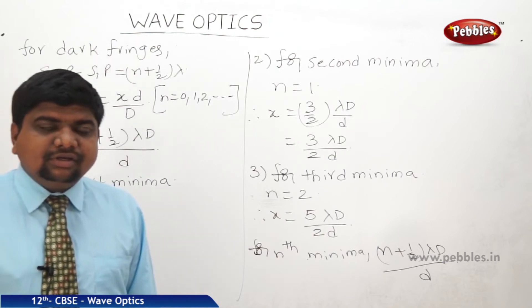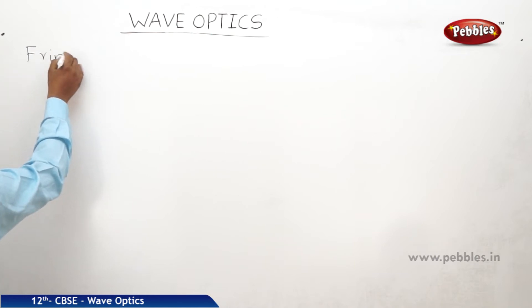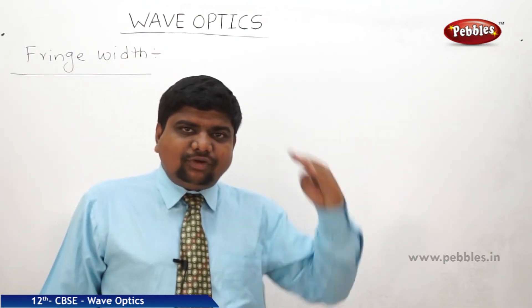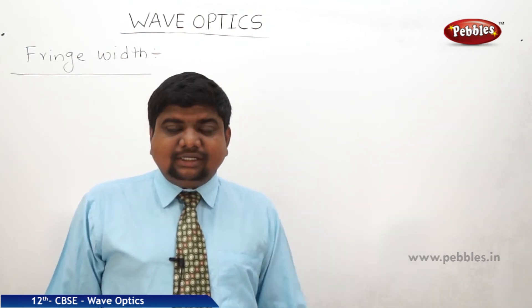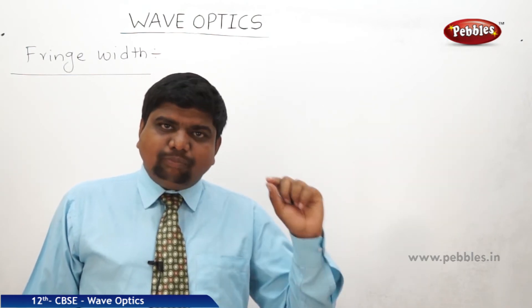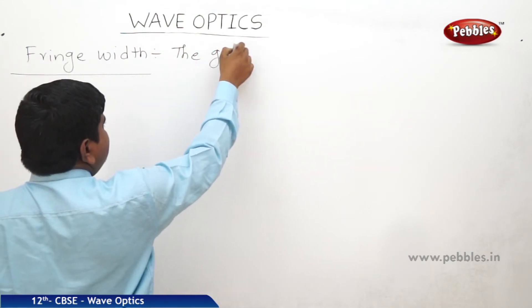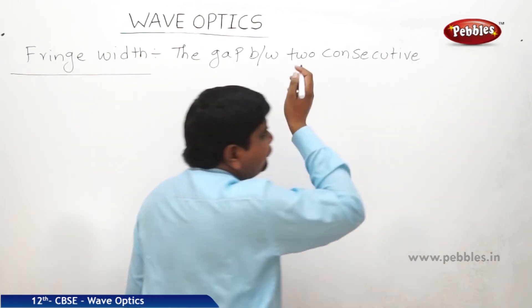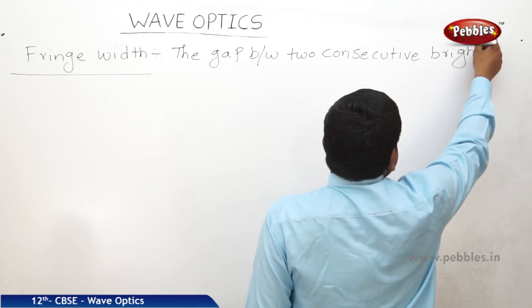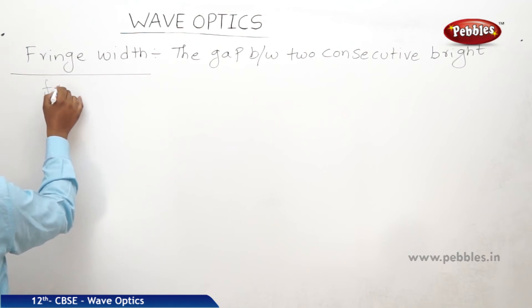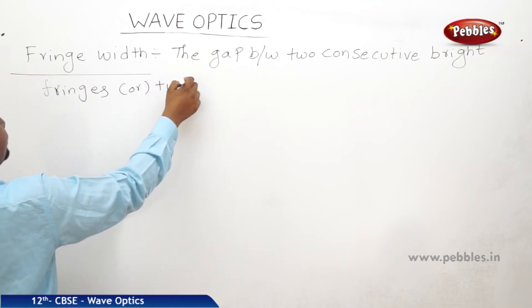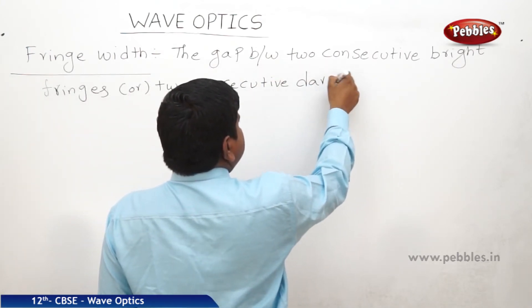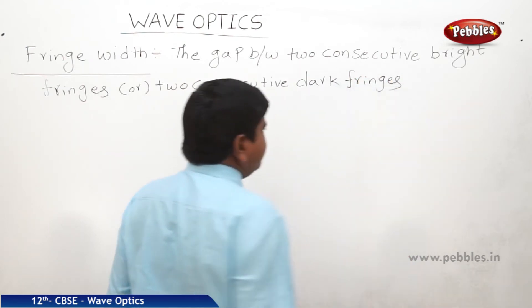These are the values for dark fringes. Next we will find out fringe width beta. The alternative pattern of dark and bright fringes appears in the interference pattern. The gap between two consecutive dark fringes or two consecutive bright fringes is called fringe width or fringe gap.